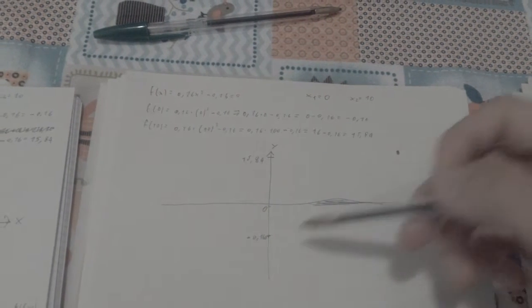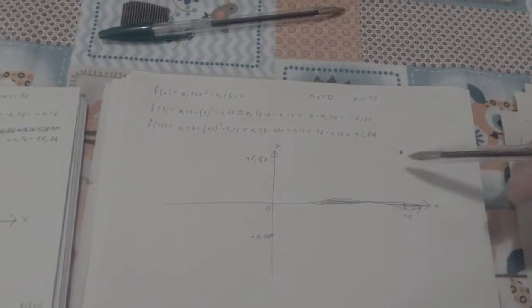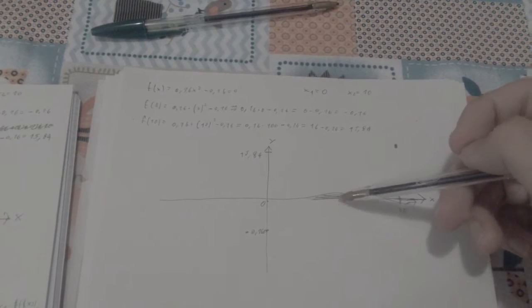Alright, so basically we expect the function is going to go through the axis, and there must be a point at which it's going to be 0 if it is continuous.